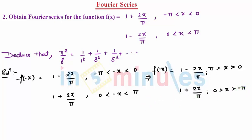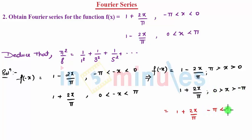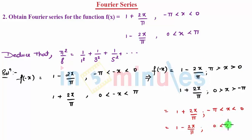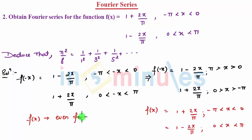So finally, we can see that f of minus x is: 1 plus 2x by pi for minus pi to 0, and 1 minus 2x by pi for 0 to pi. By checking both functions, I can say f of x is an even function.